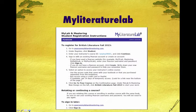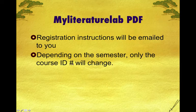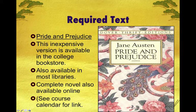These are the instructions for getting on to My Literature Lab. You're going to need to enroll in the course with the course ID, which is Tarpley 08601, and all the instructions for registering are on this form. I am going to email the form to you as a PDF so you'll be able to print it and use it when you purchase the access code. Note that depending on the semester, your course ID will change. The third required text is Pride and Prejudice, which you can buy from the bookstore, check out from the library, or download on your phone, iPad, Kindle, or computer.